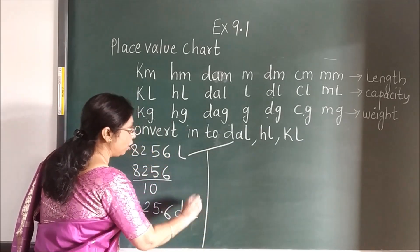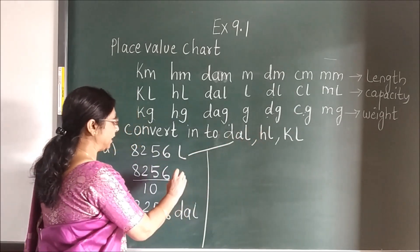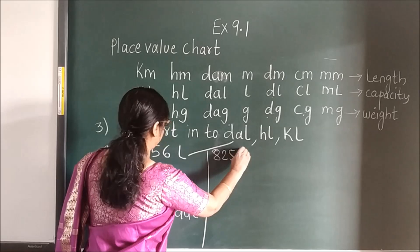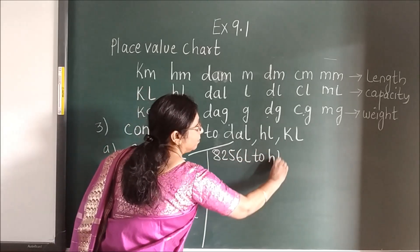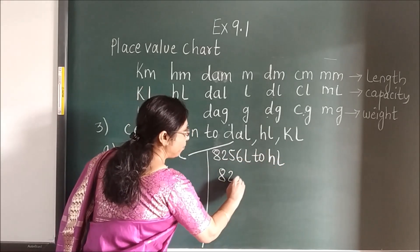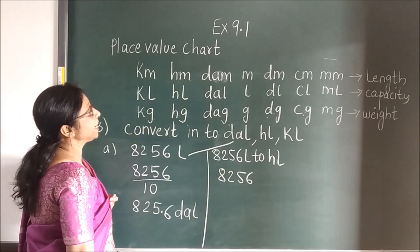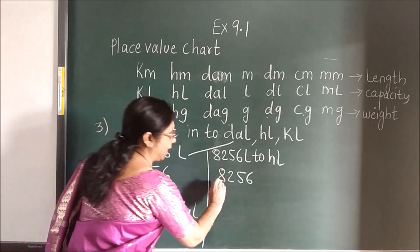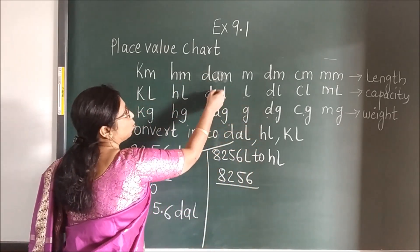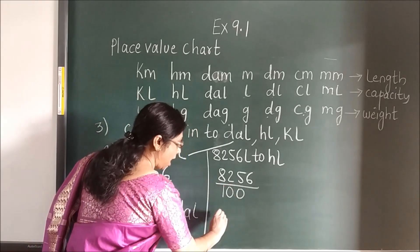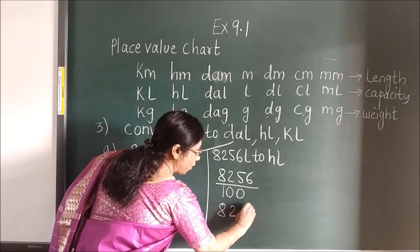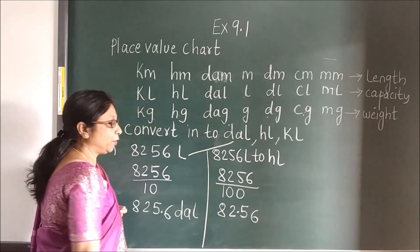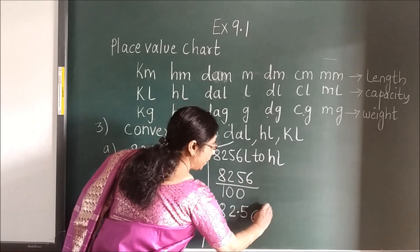Let us move to the next number — that is HL. So 5, 6 — L to HL. Again you will write the same number. L to HL — where is L? L is here, children. And HL is here. You are moving left. Divide. How many times? 1, 2. So divide by 100. And when you write this, see how many zeros there are — place 2. After 2 digits, the point. This will be your HL.